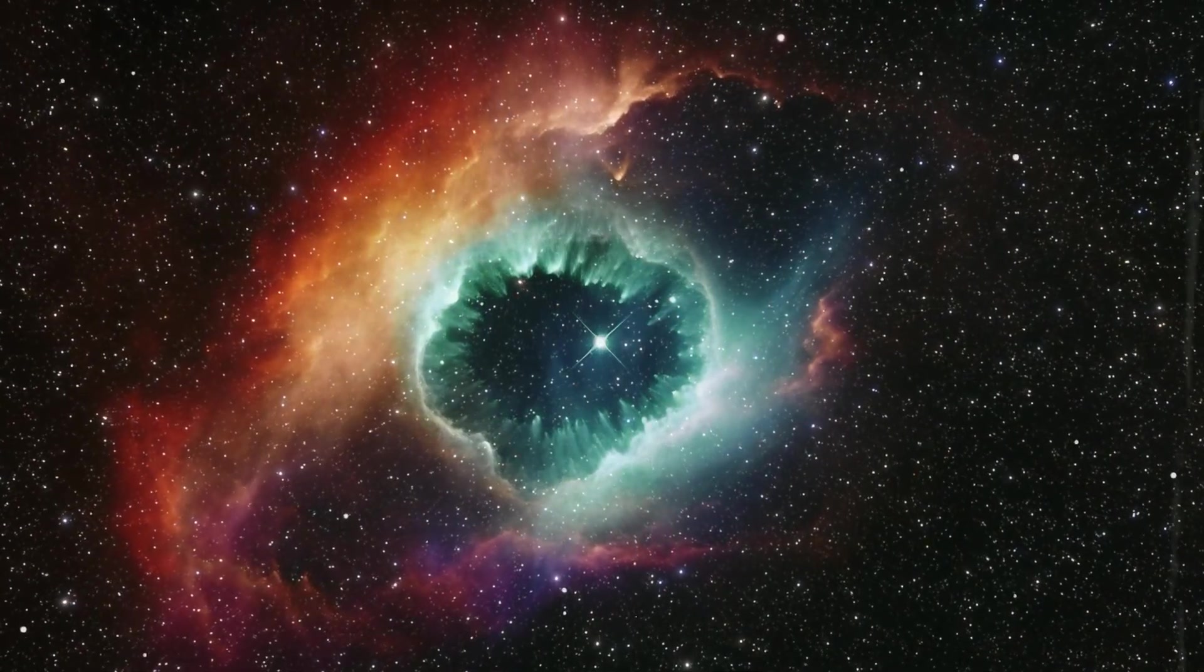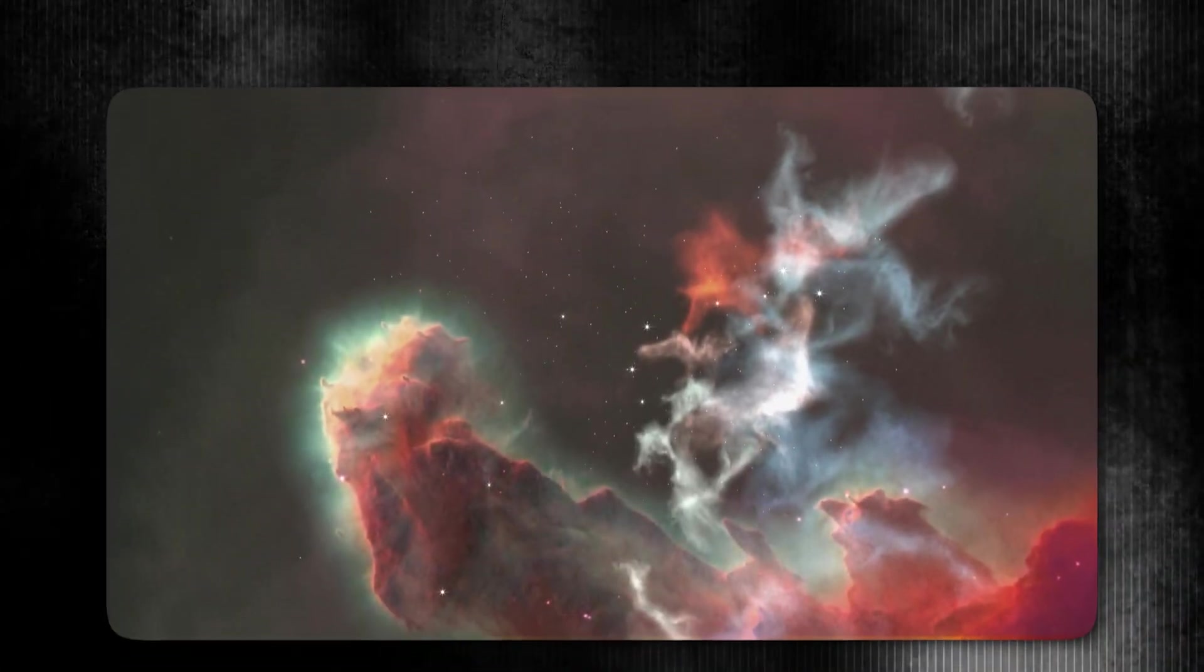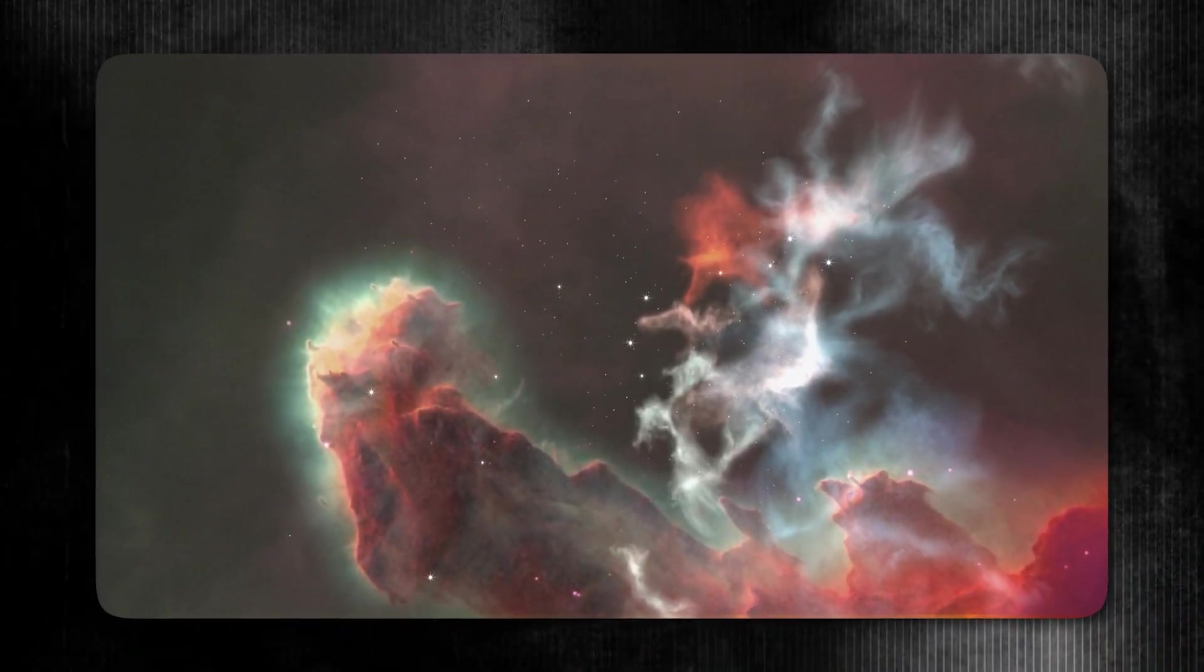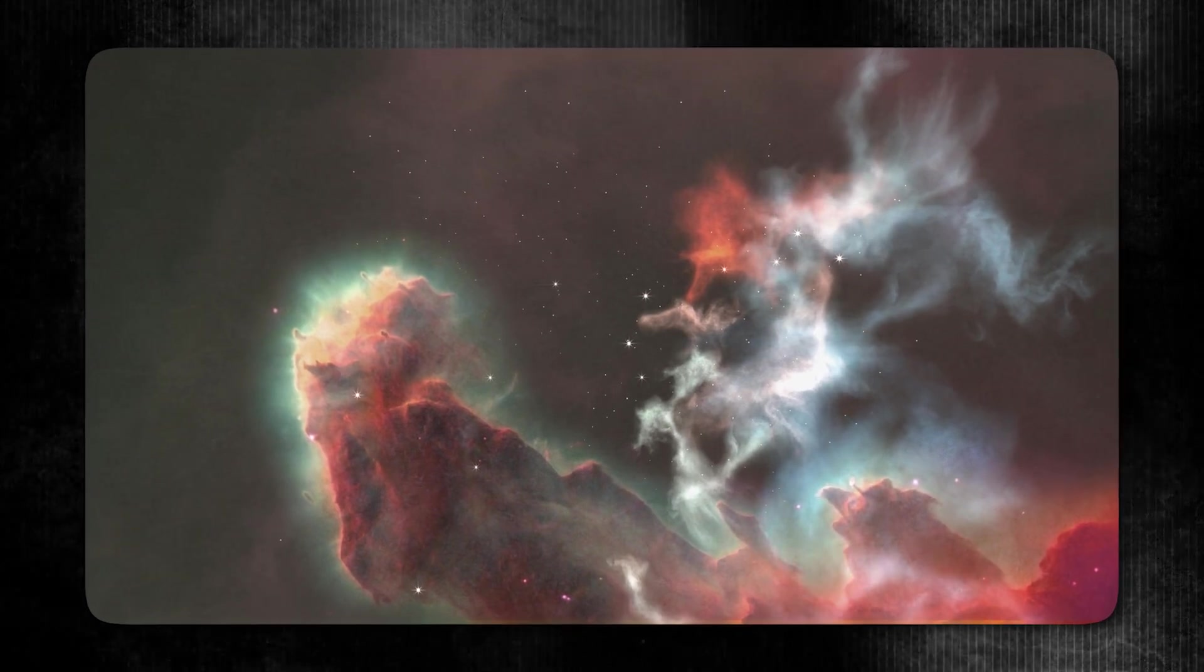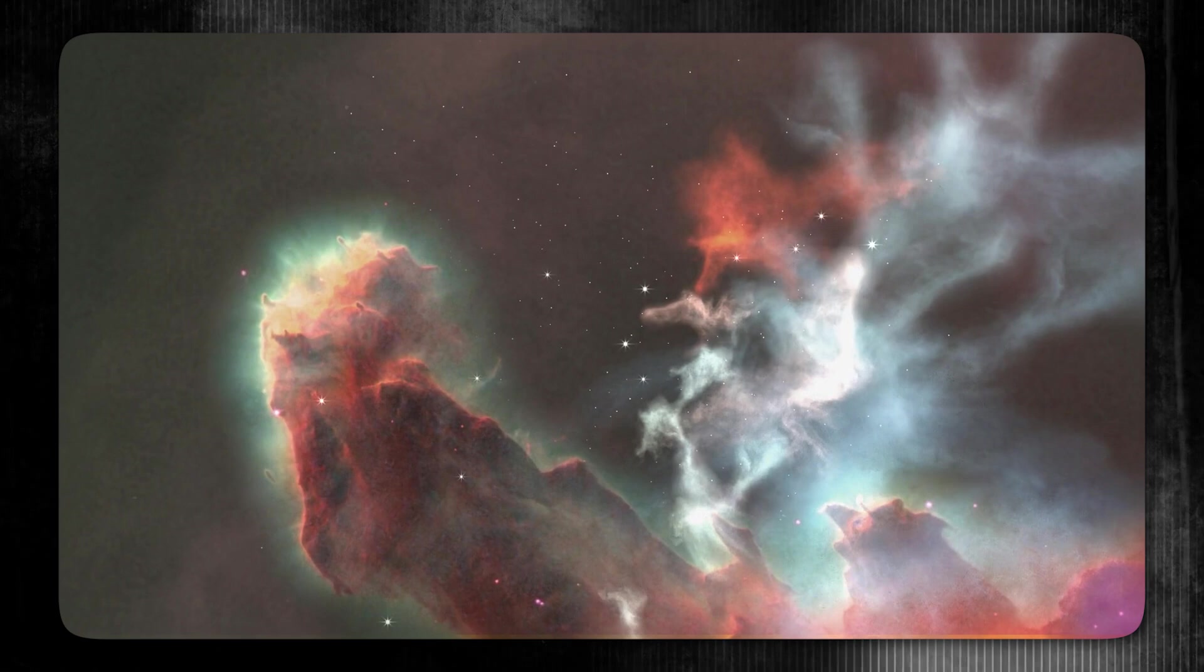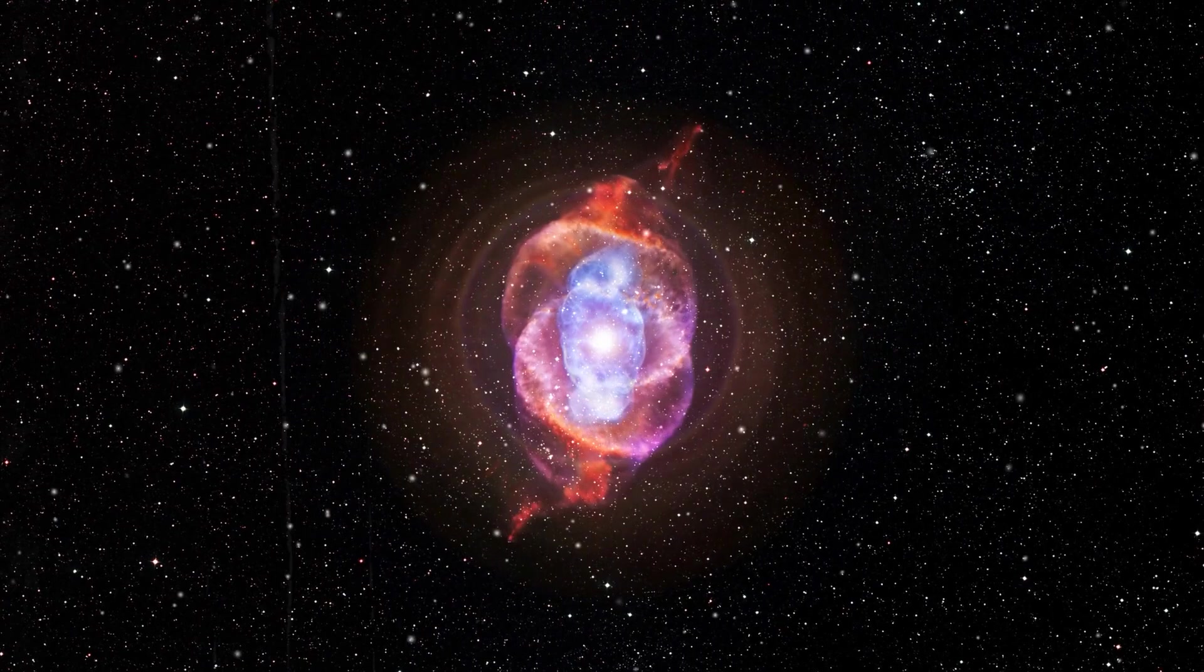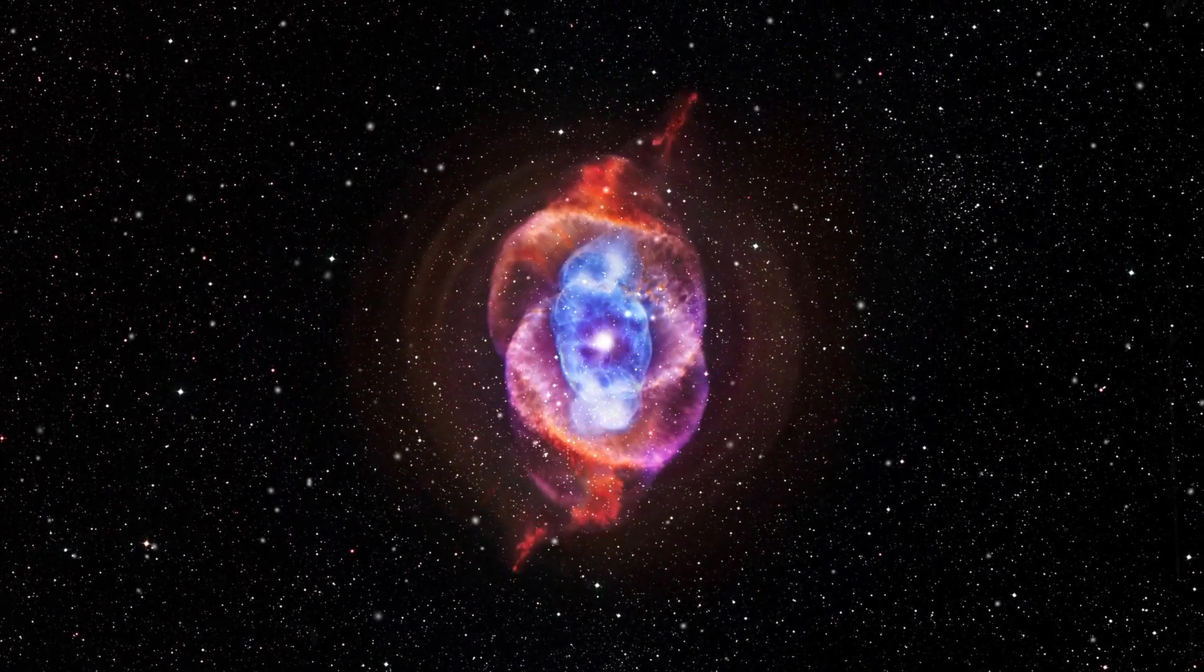Planetary nebulas like the Southern Ring Nebula are created when aging stars expel vast amounts of dust and gas during the final stages of their lives. These materials form intricate and often symmetrical structures that JWST's instruments can capture with remarkable clarity, offering a deeper understanding of how stars end their life cycles and contribute their material back to the cosmos.